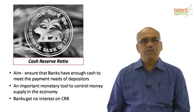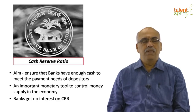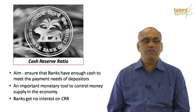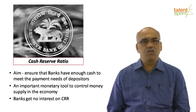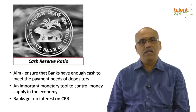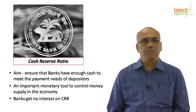For example, whenever the cash reserve ratio goes up, banks will have less money to lend, which will impact the economy. When the cash reserve ratio goes down, banks will have more money to lend, which will obviously lead to more money supply in the economy.